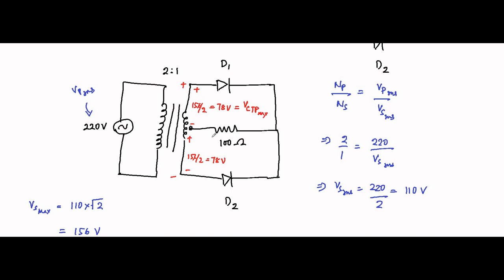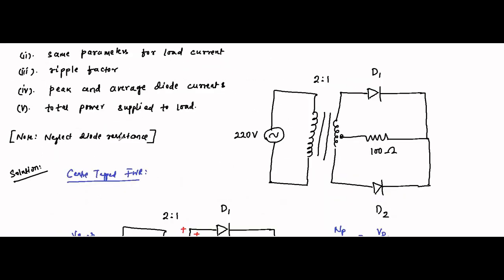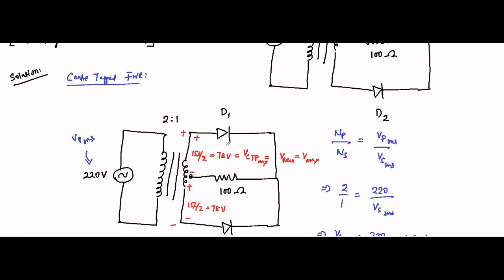We can call it VCTP_max, and this is also the peak value of voltage to which each diode is subjected. Since the diodes are ideal with zero resistance, there is no voltage drop across them — the diode behaves as a short circuit when on. Therefore, the entire 78V appears across the load, and the peak value of the load voltage is equal to 78V.